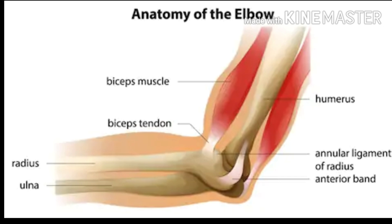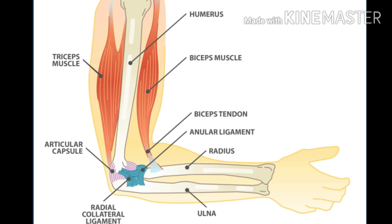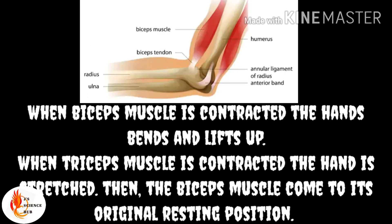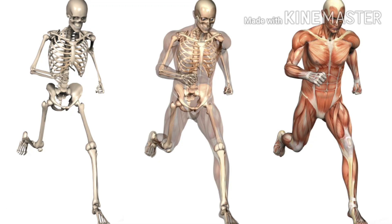Let's consider the human elbow joint. You can observe two different muscles there: the upper muscle is known as the bicep muscle and the lower muscle is known as the tricep muscle. These bicep and tricep muscles are essential for the movement of the elbow joint. When the bicep muscle is contracted, the hand bends and lifts up. When the tricep muscle is contracted, the hand is stretched, and the bicep muscle returns to its original resting position.